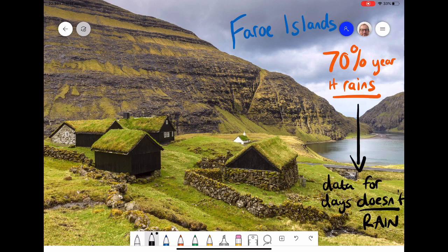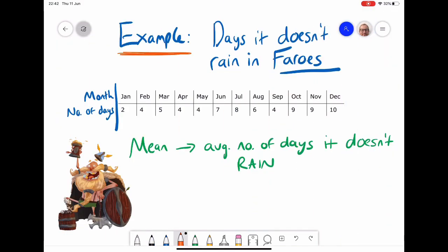We're going to find out what the average is over the year and then we're going to look and see how much the data set deviates. So here is our data set for the amount of days it doesn't rain in the Faroe Islands.